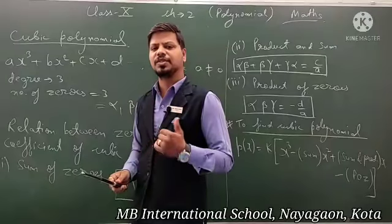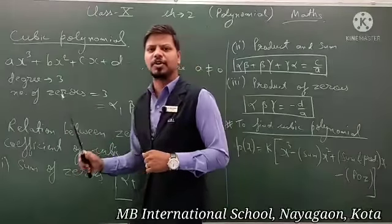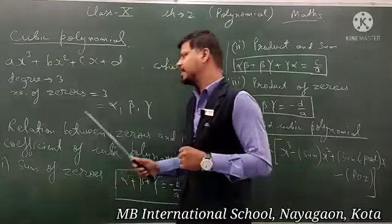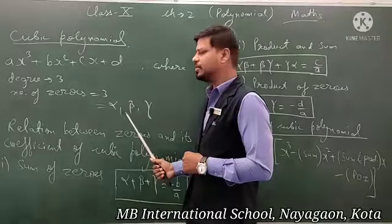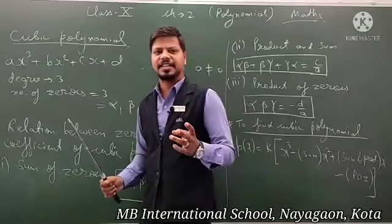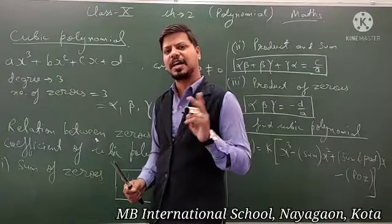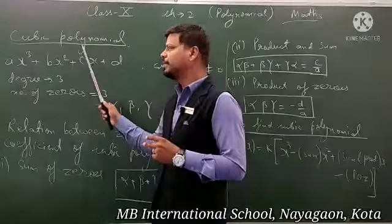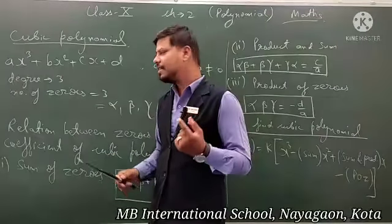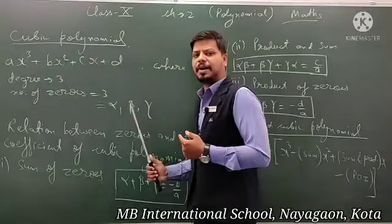Jitni degree hoti hai utni hi zeros hoti hain. So there are 3 zeros of a cubic polynomial. Un teeno zeros ko humne naam diya hai — ek ko bola alpha, doosre zero ko beta, aur teesre ko gamma. Jaise quadratic polynomial mein do zeros nikalte the unko naam dete the alpha aur beta, waise cubic polynomial mein teen zeros hain — pehle wale ko alpha, doosre ko beta, teesre ko gamma.